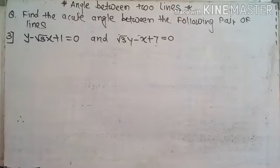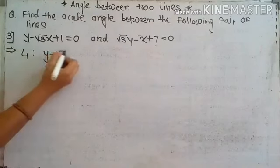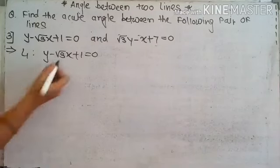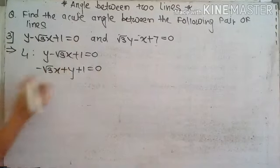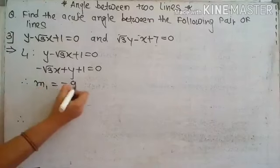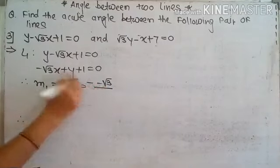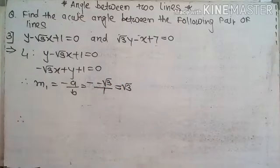Next example: y minus root 3 x plus 1 equal to 0 and root 3y minus x plus 7 equal to 0. The first line y minus root 3x plus 1 equal to 0 is rewritten in proper form as minus root 3x plus y plus 1 equal to 0. Therefore slope M1 equals minus A upon B, that is minus of minus root 3 upon 1, giving M1 equal to root 3.